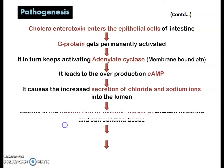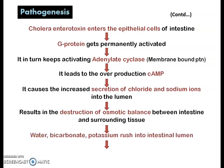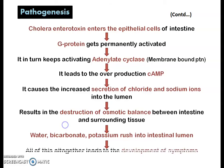This results in the destruction of osmotic balance between the intestine and the surrounding tissues. Due to the secretion of chloride and sodium ions, an osmotic imbalance develops, and as a result water, bicarbonate, and potassium rush into the intestinal lumen.